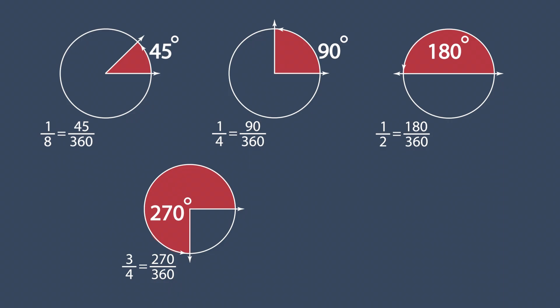And finally, we have the whole circle, which is equal to 4 fourths. 4 fourths is the same as 360 over 360, giving us a measurement of 360 degrees.